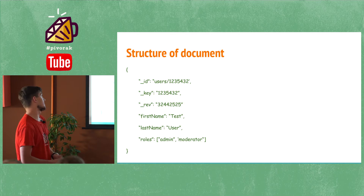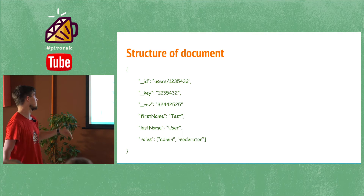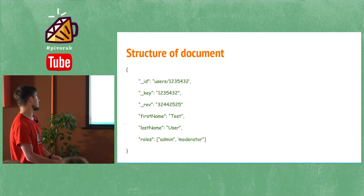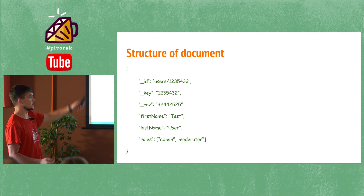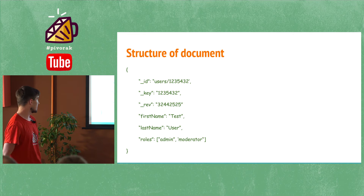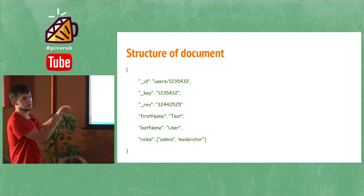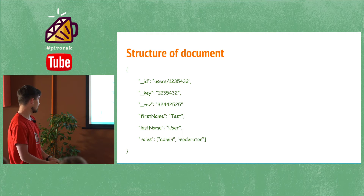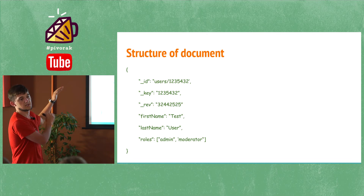It's all about documents. Documents are simple — they're like JSON — but they have a couple of special fields. There's _id, which is the name of your collection slash a randomly generated ID. There's _key, which is the same as the ID. And there's _rev, which is a random revision number for your document. You can insert nested objects and arrays. A collection is an object with meta information and documents like this.